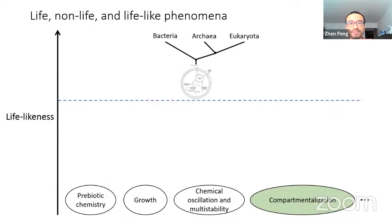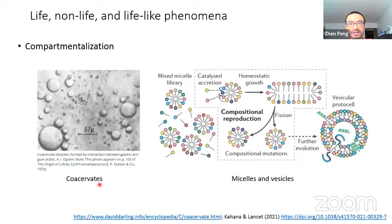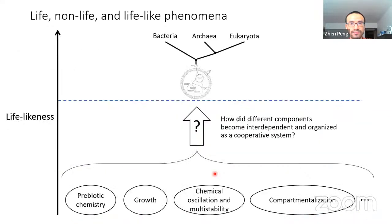Compartmentalization is possible without a living system. For example, coacervates can appear when some types of organic polymers are put in an aqueous space, and protocells and vesicles can be formed with long-chain amphiphiles. These compartments are known to exhibit life-like behaviors such as growth and division. Therefore, the origin of life question stands to find a mechanism that can integrate all these abiotic yet life-like systems and features into a system that is undoubtedly a primitive form of life.